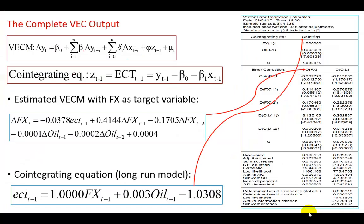As a reminder, this is the vector error correction model, and the cointegrating equation is shown here. When you look at this output, there are two aspects that are particularly of interest. The first is the main equation shown column-wise for the change in FX, which is the target variable, written out in conventional form. Based on how the output appears in EViews, the cointegrating equation coefficient comes first — negative 0.0378 — which is the error correction term coefficient phi.